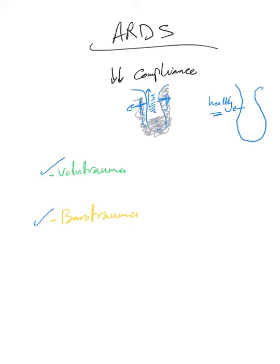That's why we recommend in ARDS to keep tidal volume at 6 ml/kg or less of ideal body weight. That's the first strategy to prevent volume trauma and to help reduce plateau pressure and barotrauma, because there are fewer healthy alveoli and less space for tidal volume overall.